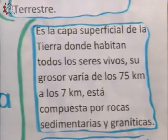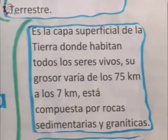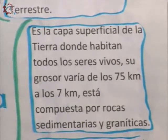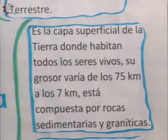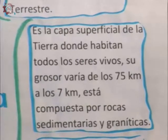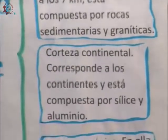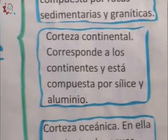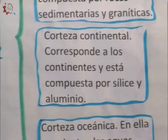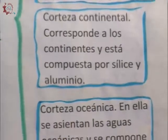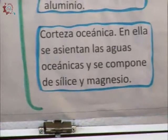The Earth's crust, as I mentioned, is where economic, cultural, political, and social activities take place — everything we already saw in block one. It is the surface layer of the Earth where all living beings inhabit. Its thickness varies from 75 kilometers to 7 kilometers. It is composed of sedimentary and granitic rocks. The continental crust corresponds to the continents and is composed of silica and aluminum. The oceanic crust supports oceanic waters and is composed of silica and magnesium.